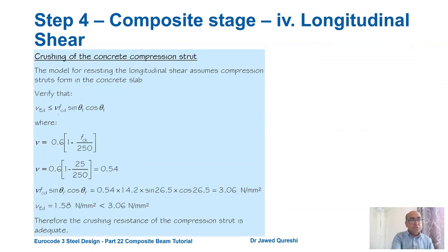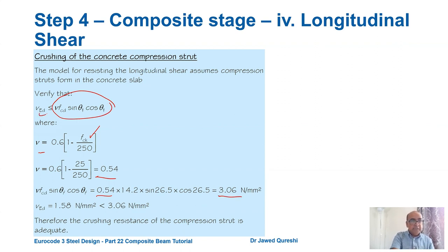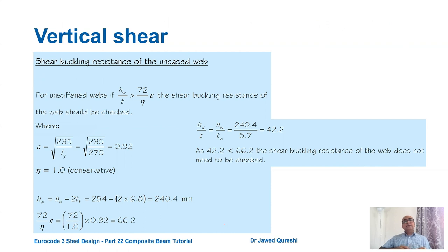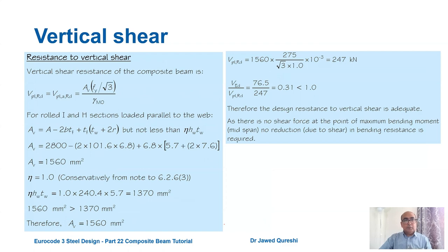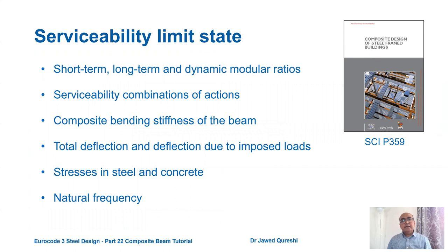Strut check: vEd ≤ v × fcd × sin θ × cos θ, where v = 0.6(1 − fck/250) = 0.6(1 − 25/250) = 0.54. This gives a resistance of 3.06 N/mm². Since vEd = 1.58 N/mm² < 3.06 N/mm², the concrete strut crushing resistance is adequate. Vertical shear follows the same process as for restrained beams; it is not covered in detail here but also passes.